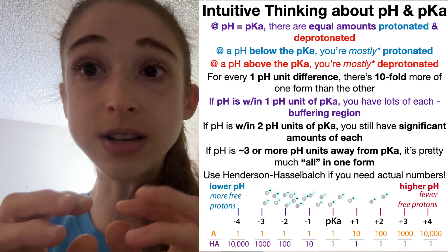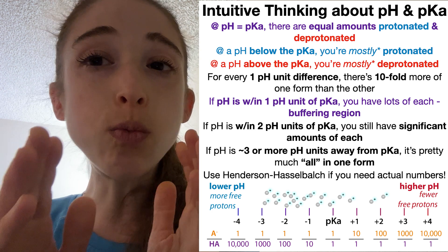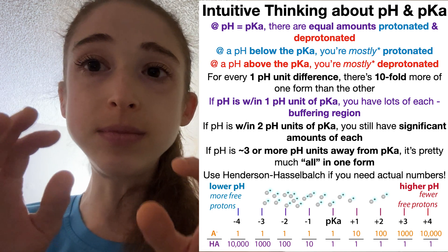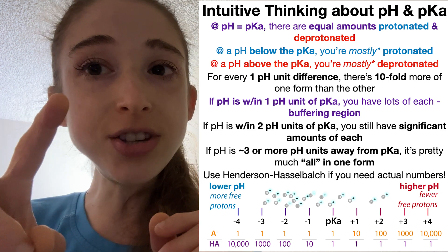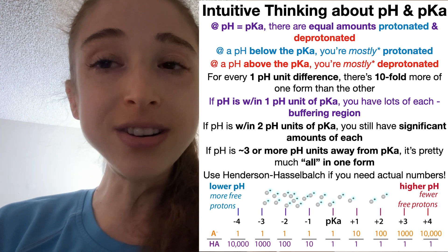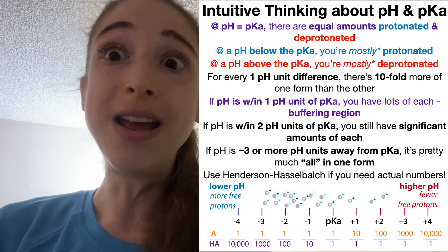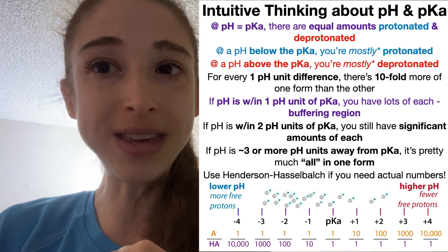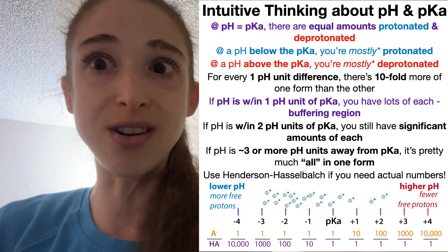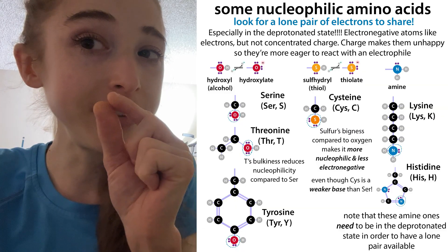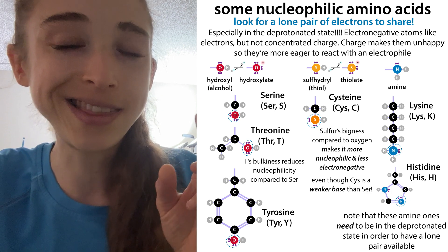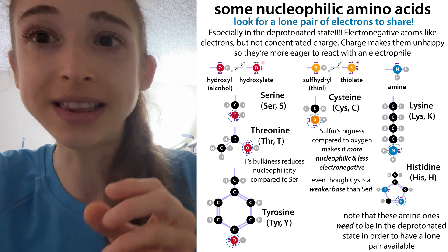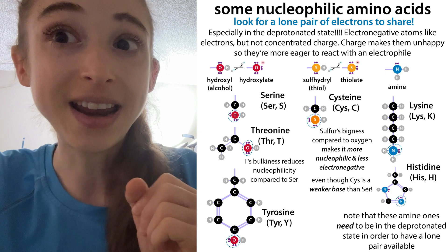So at the pKa you have equal amounts of conjugate acid and conjugate base. Within about one pH unit, you have tenfold more of one than the other — still significant amounts of both. At two pH units it's a hundredfold, three pH units a thousandfold, four pH units ten thousandfold. As you get further from the pKa, you can consider things essentially all one form or the other. But note that sometimes that really tiny proportion we consider negligible is actually really important — especially for catalysis, where you only need a little bit of something protonated or deprotonated to have a large effect.